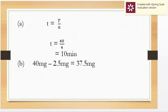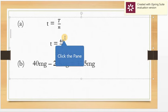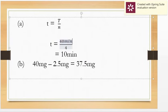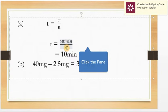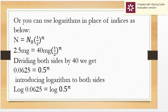Now that we have found the number of half-lives, we can use a simple formula to find the actual half-life. Half-life equals total time elapsed divided by the number of half-lives. So the half-life is 40 minutes divided by 4, which gives us 10 minutes.